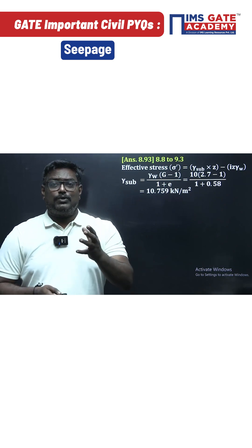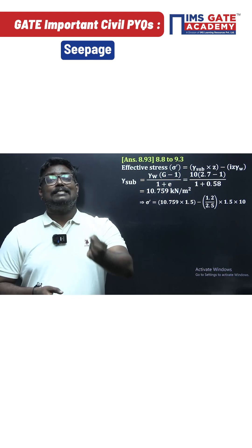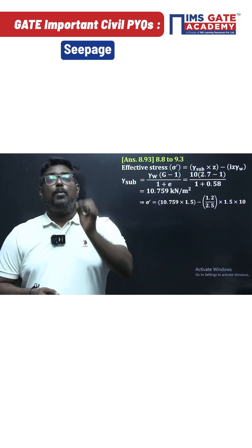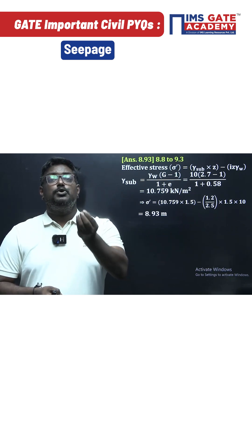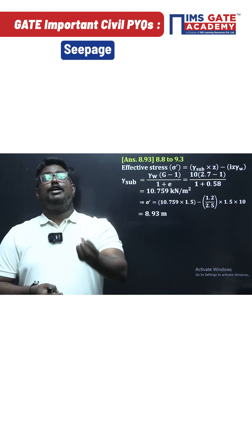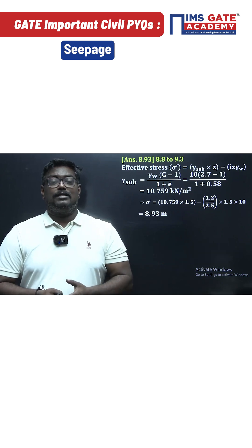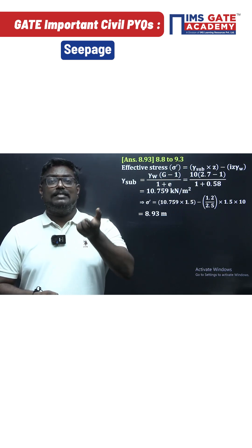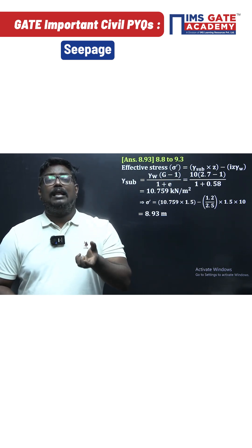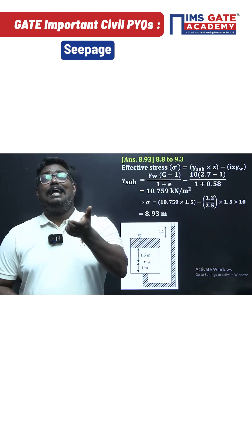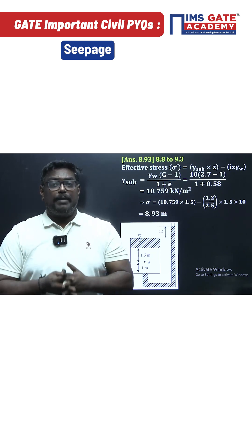After substituting for effective stress, the length of the sample is 2.5 m, and this acts at point A which is at a height of 1.5 m. The seepage pressure is given by the formula: unit weight of water × hydraulic gradient × z. Hydraulic gradient is defined as loss of head per unit length. The loss of head is 1.2 m and the length of the soil sample is 2.5 m, and the depth is 1.5 m. On substituting all these values, you will get a value of 8.93 kN/m².